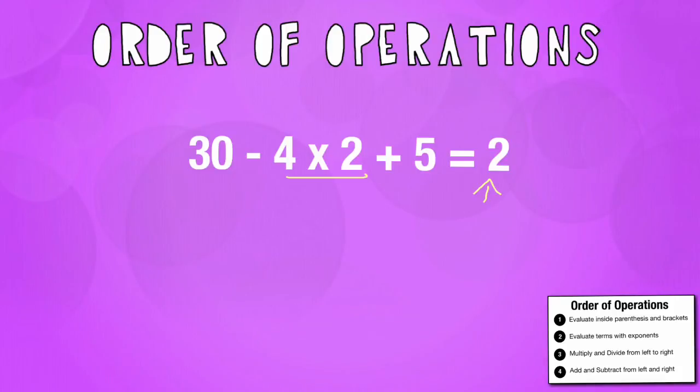So what we must do is put in some parentheses to make this true. Now I know if I put parentheses around the 30 minus 4, I'd have to do that first and I'd get the answer of 26. Then I have to do 26 times 2 plus 5. I know I'm not going to get 2.